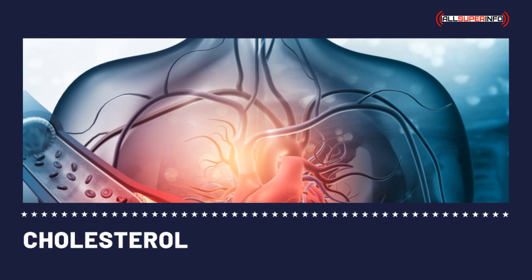The cholesterol ratio is derived by dividing the total cholesterol by the HDL cholesterol. So if a patient has a total cholesterol of 200 and an HDL of 50, his cholesterol ratio would be 4 to 1. The average ratio would be 4.5 to 1 or below 5 to 1, and the most ideal cholesterol ratio would be about 2 to 1 or 3 to 1, or anything under 4 to 1.